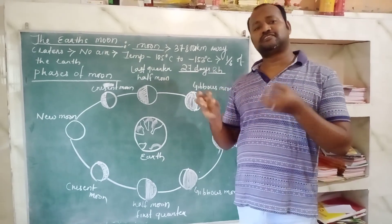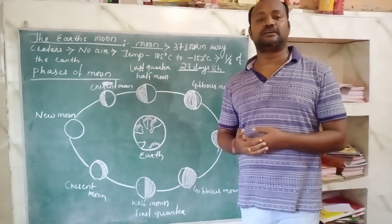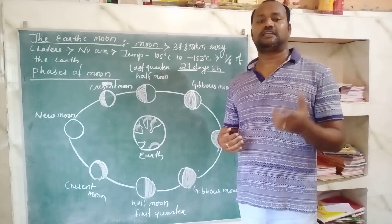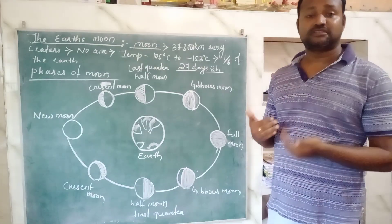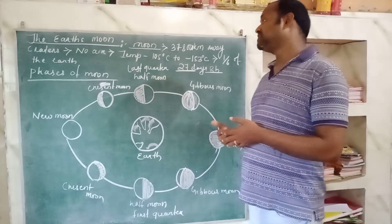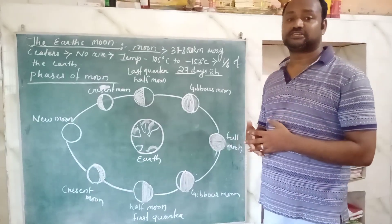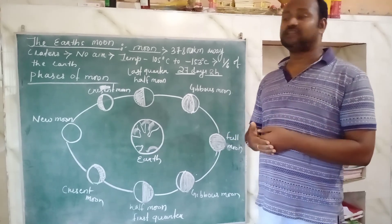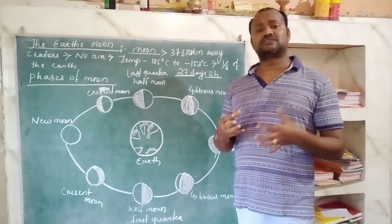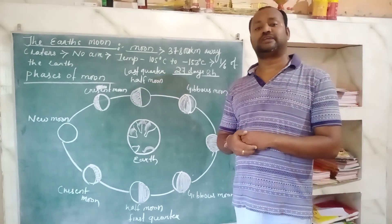Sometimes you can see different types of images on the moon — these are actually the craters which we can see from Earth's surface. The moon does not have any air. The temperature over the moon varies a lot between day and night: it is about 105 degrees Celsius during the day and about minus 150 degrees Celsius at night. The moon is one-sixth the size of the Earth, and because the mass of the moon is very less compared to the Earth, the gravity of the Earth is more, and that's why the moon rotates around the Earth.